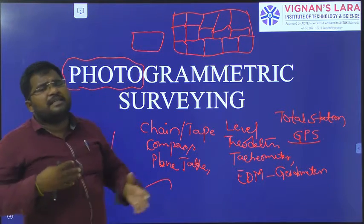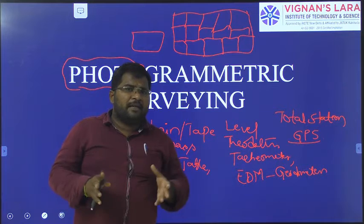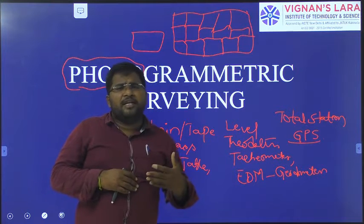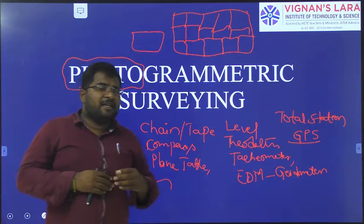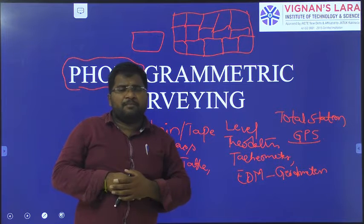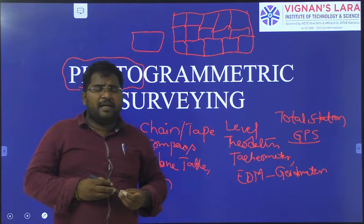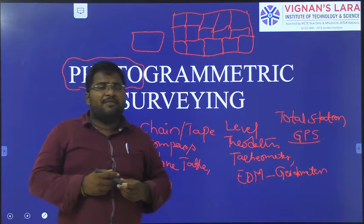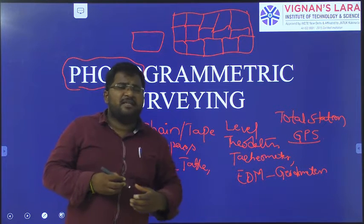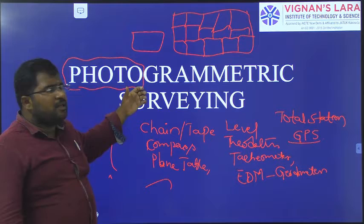From these photos we can calculate levels, areas, and lengths. Even in areas where direct surveying is difficult — such as marshy land, forests, or water bodies — you cannot physically go and survey. But by using these photos, even brought back to the office, you can see the land very clearly. These are the advantages of photogrammetric surveying.